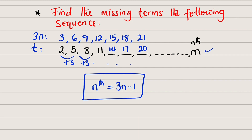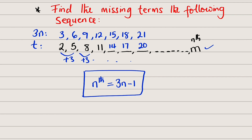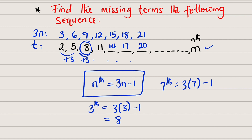Let us take some numbers at random to verify this formula. For the third term, where n equals 3: 3×3 − 1 = 9 − 1 = 8, and that is correct. Now for the seventh term: 3×7 − 1 = 21 − 1 = 20, which matches. So the formula 3n − 1 works for all terms in this sequence. That is all I have for you today. Thank you for watching, do have a nice day.